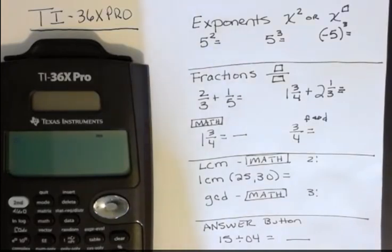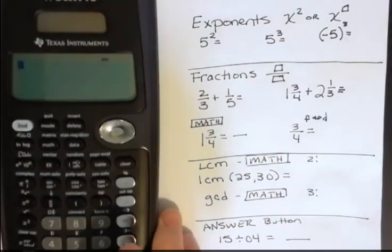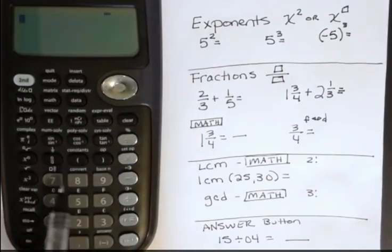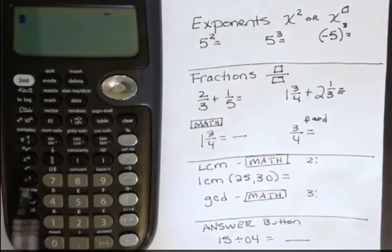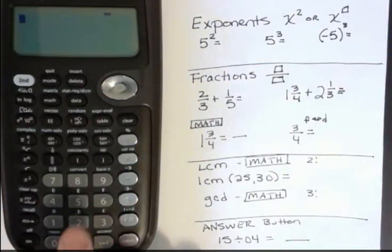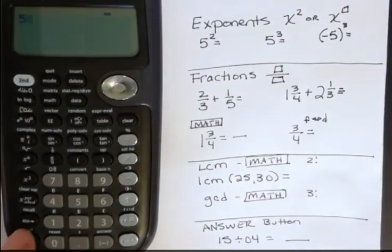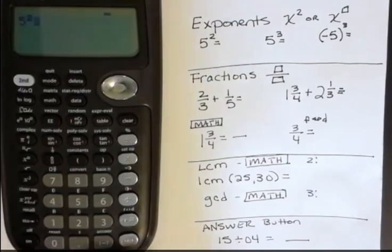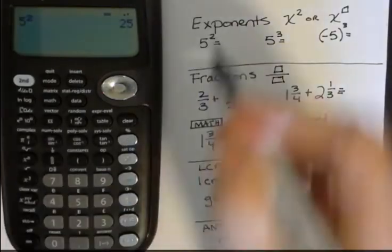For exponents, there's two different ways to do an exponent. If you're taking something to the second power, the button right next to the 7 is what you want. So if you want to take 5 to the second power, you're going to hit 5, and then that x squared button, and that's going to automatically take that to the second power, and then you're going to hit Enter. So that would be 25.